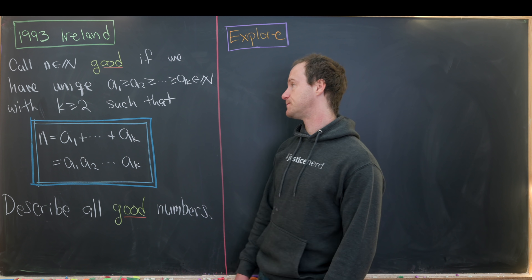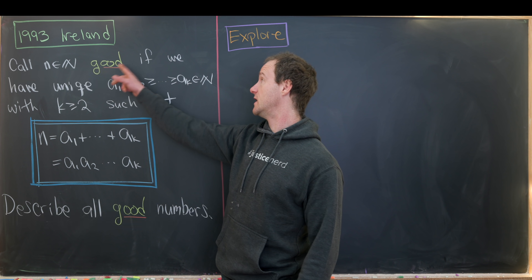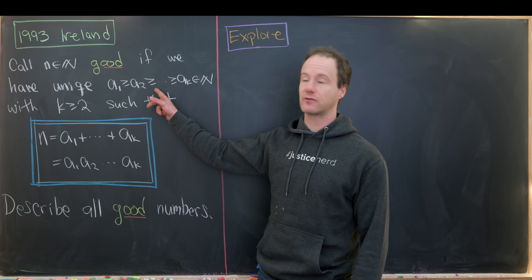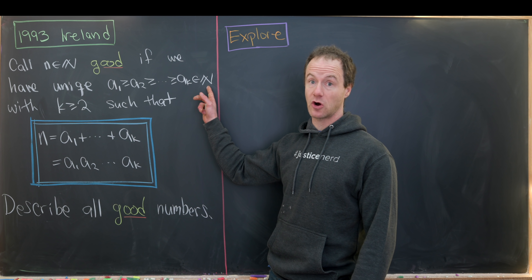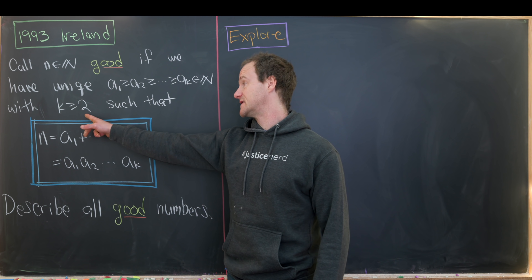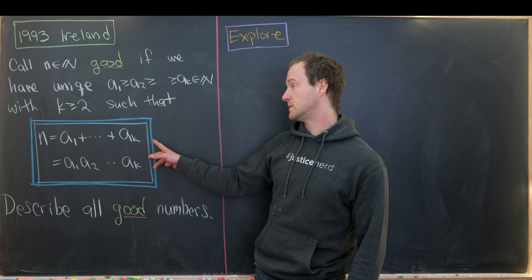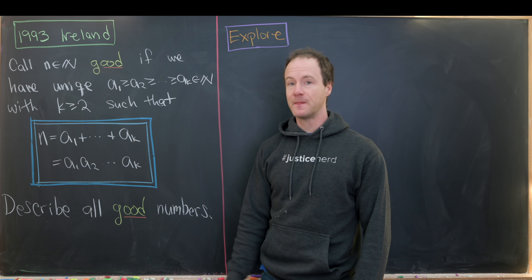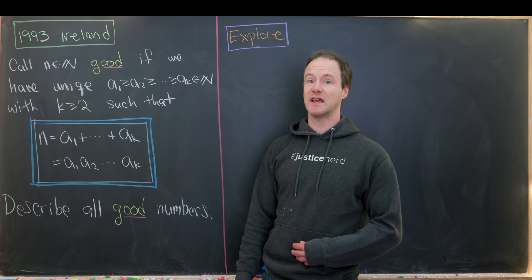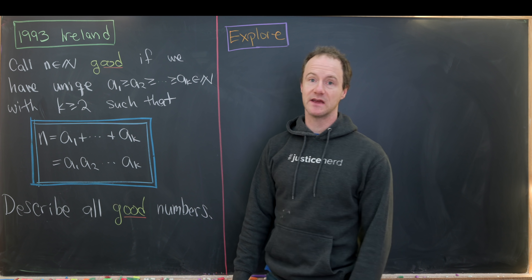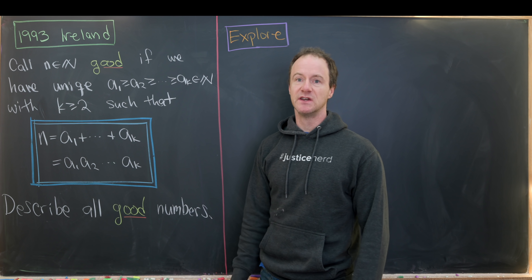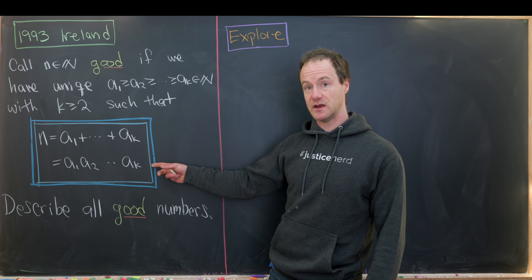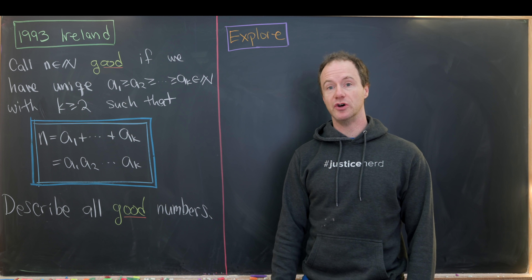So let's call a natural number n good if we have numbers a1 ≥ a2 ≥ a3 ≥ … ≥ ak, all natural numbers, with at least two of them, satisfying: n equals a1 + a2 + … + ak, and also n equals a1 × a2 × … × ak. So these numbers simultaneously form a partition of n and a factorization of n. Our goal is to describe all good numbers.